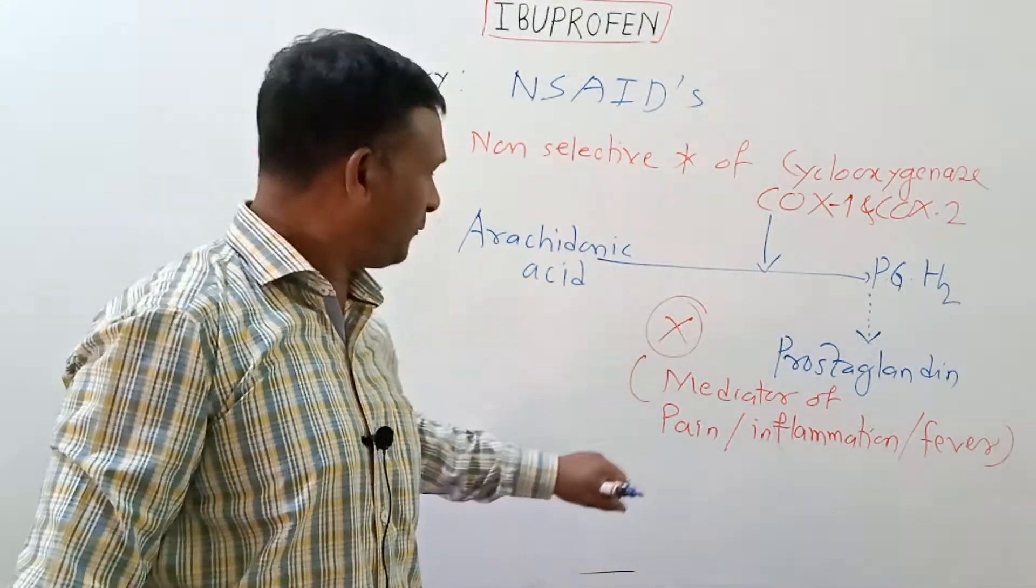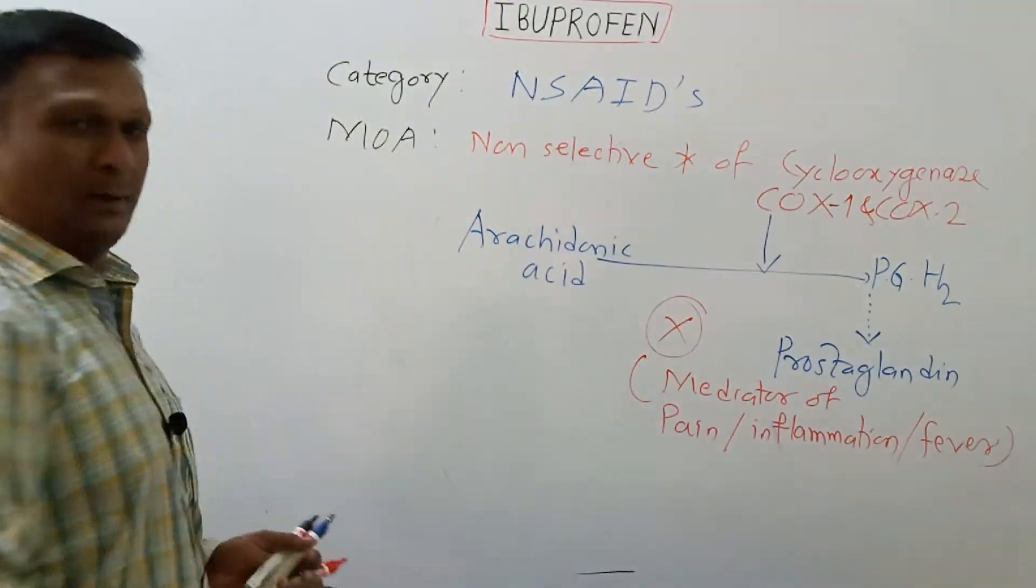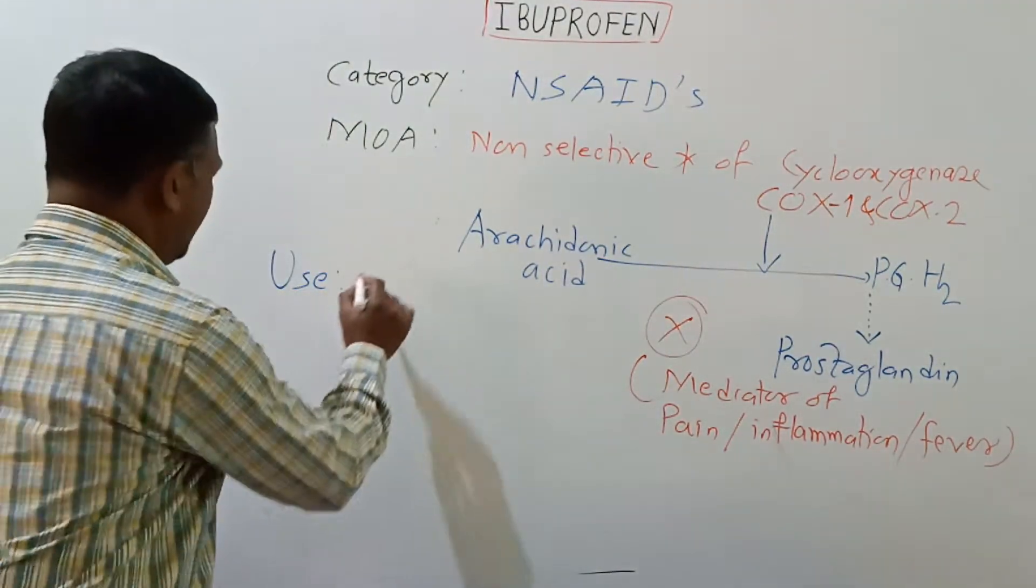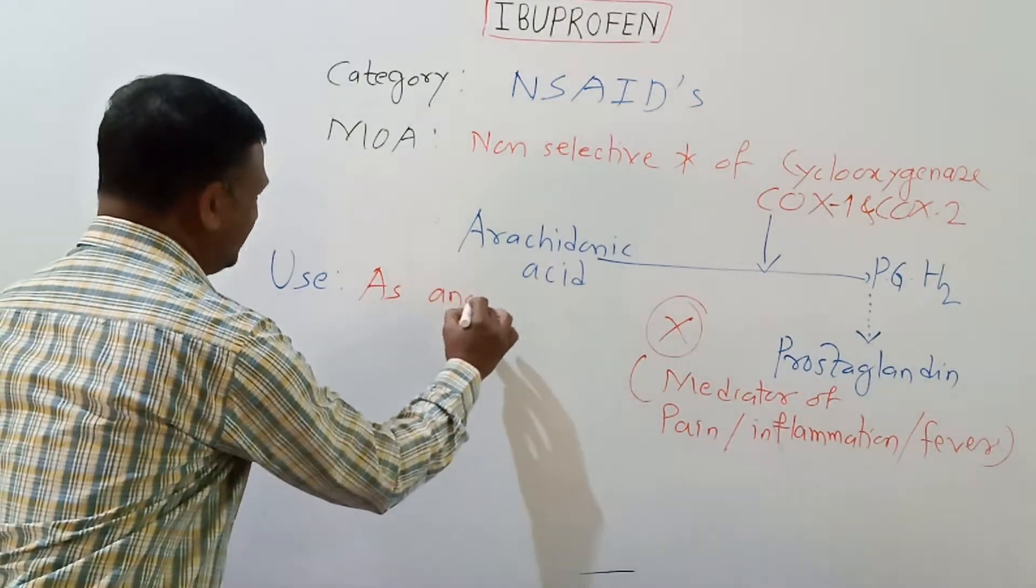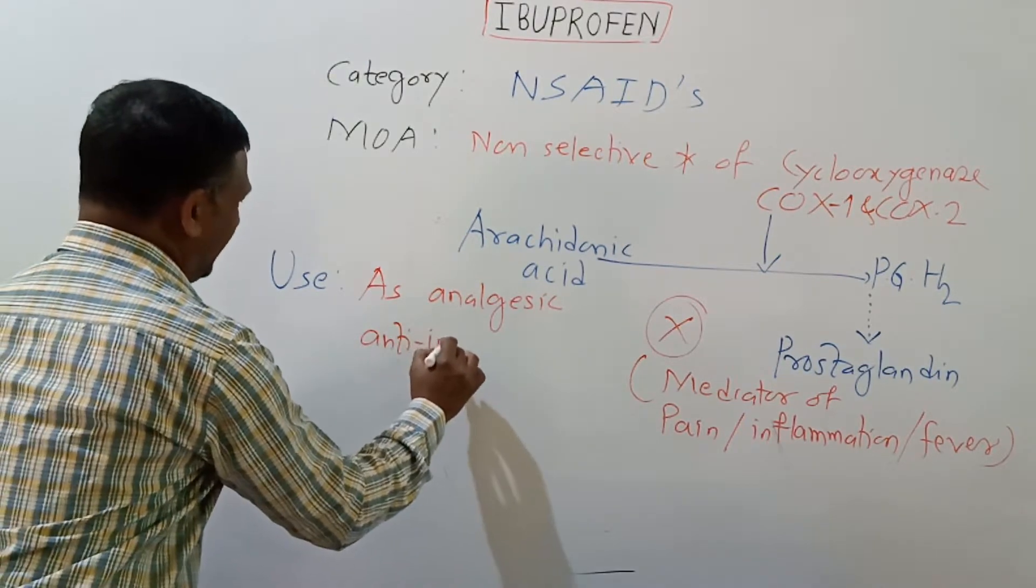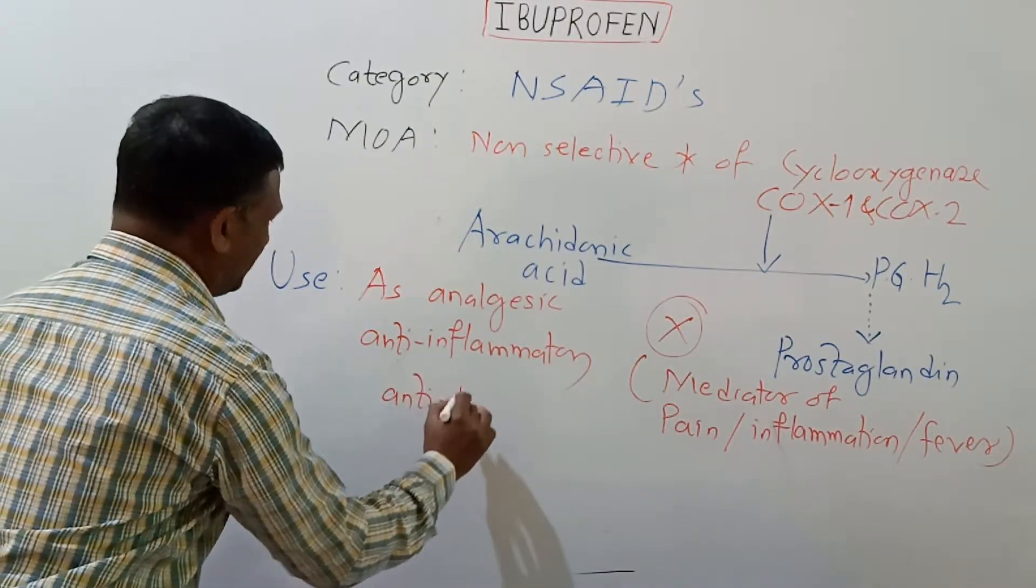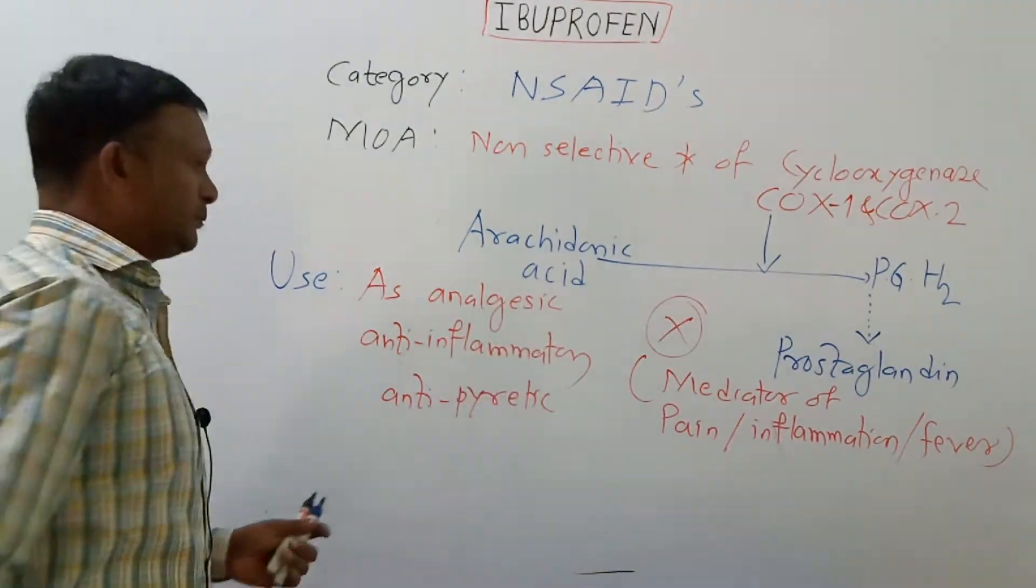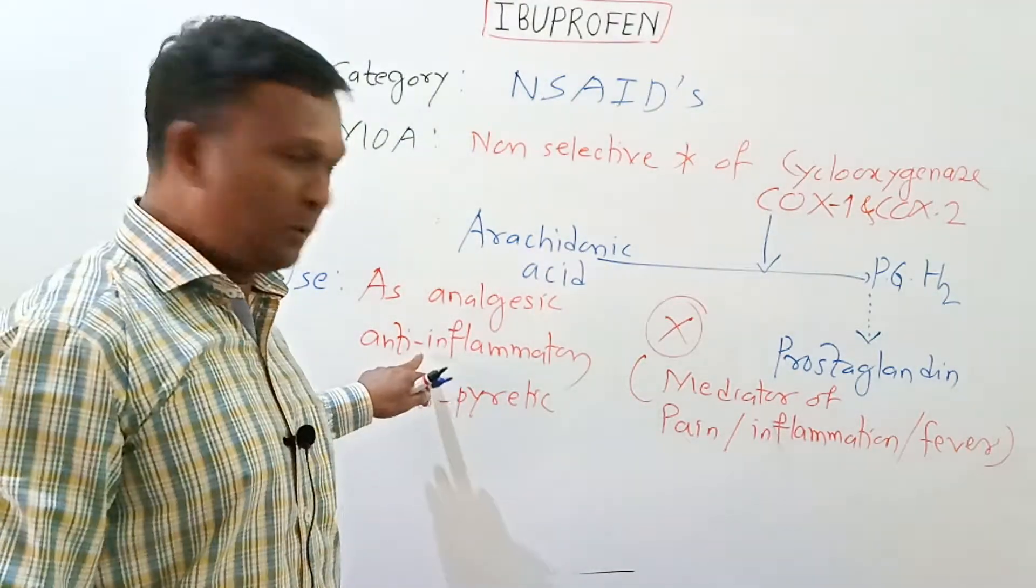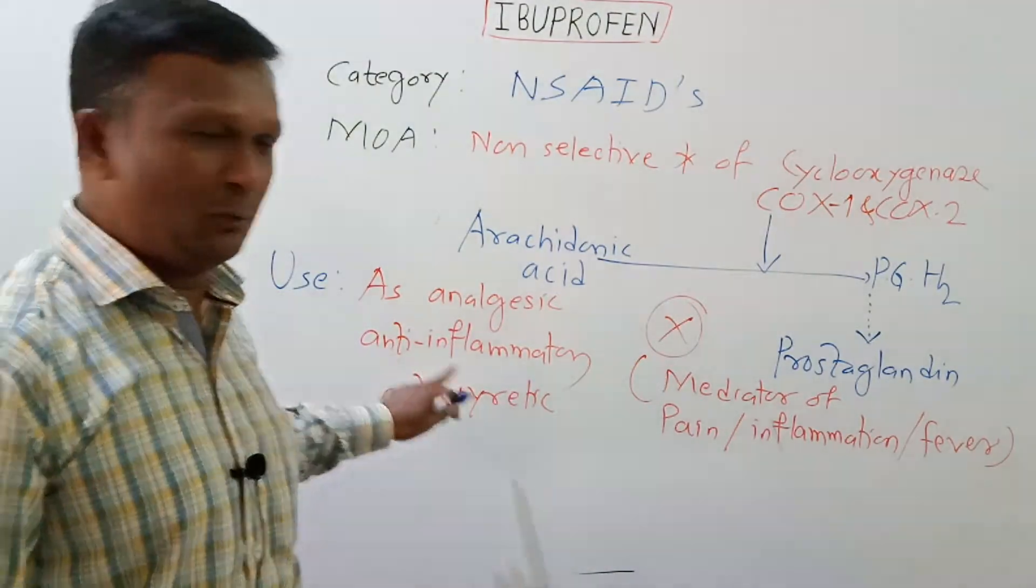there is relief from pain, inflammation and fever. Thus, the ibuprofen finds its uses as analgesic, as anti-inflammatory drug and as antipyretic drug. As analgesic, it gives relief from pain. As anti-inflammatory drug, it gives relief from inflammation and as antipyretic, it gives relief from fever.